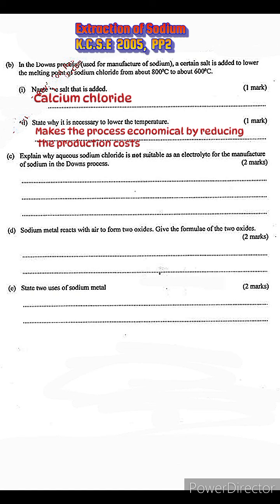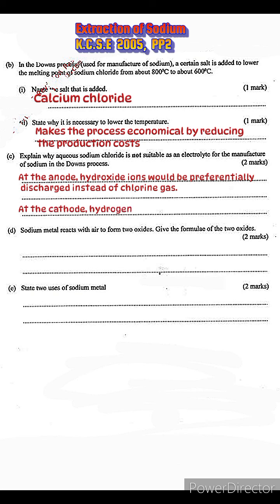Part c: explain why aqueous sodium chloride is not suitable as an electrolyte for the manufacture of sodium in the Downs process. If aqueous sodium chloride were used instead of molten sodium chloride, at the anode, instead of chlorine gas being discharged, hydroxide ions would be discharged. At the cathode, instead of sodium metal being discharged, hydrogen ions would be preferentially discharged. Essentially, no sodium metal would be extracted.